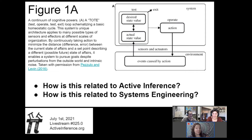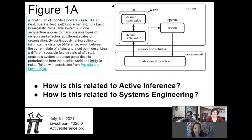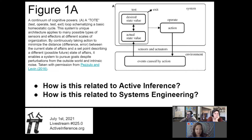This is a continuum of cognitive powers — just the first part of the figure. This is a TOTE — test, operate, test, exit — loop, which is a schema of a basic homeostatic cycle. The author says that by continuously taking action to minimize the difference between the current state of affairs and a set point describing a different possible future state of affairs, it enables a system to pursue goals despite perturbations from the outside world and intrinsic noise. The first possible counterfactual: yes, it's 75 degrees and I have plenty of sodium, potassium and calcium — but what if it's not always this way? What if my state changes? That first counterfactual maybe enabled this kind of homeostatic feedback loop.